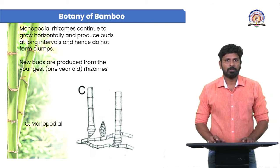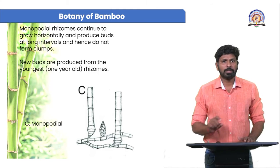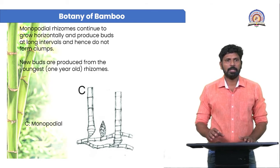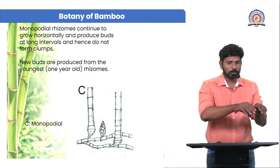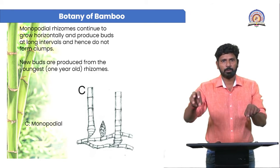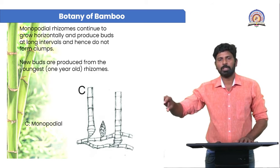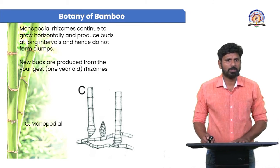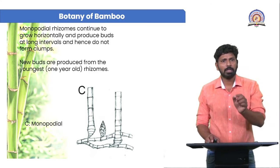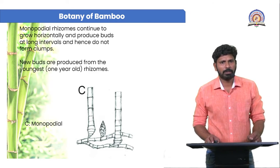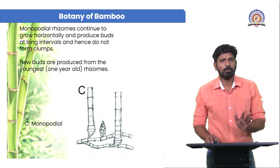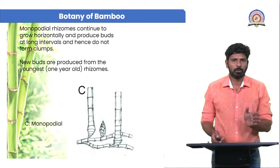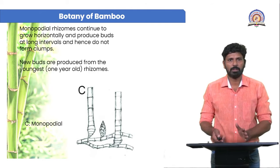The second type is the monopodial rhizome, which continues to grow horizontally and produces buds at long intervals, and hence does not form clumps. It grows in one direction, and the new buds are produced from the youngest, one-year-old rhizome. This is the monopodial type of rhizome. So there are two types: sympodial and monopodial.